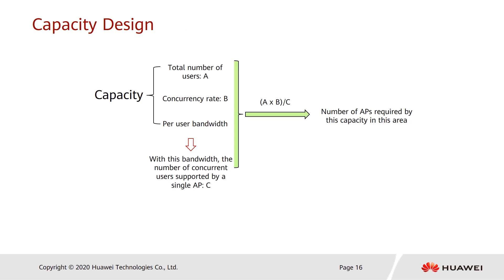The maximum number of concurrent users per AP is determined based on the per-user bandwidth required by the customer. Using the formula — total number of users multiplied by the concurrency rate, divided by the number of concurrent users per AP — we can get the number of APs required to meet the specified capacity. After meeting both coverage and capacity requirements, the network planning for indoor settled scenarios is complete. Channel planning and power adjustment will be discussed in subsequent lectures.